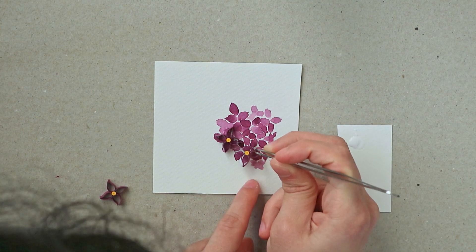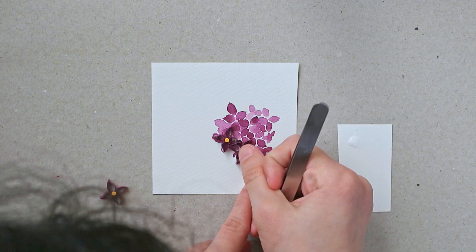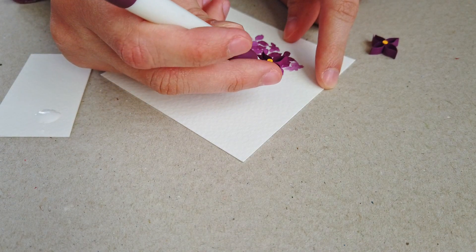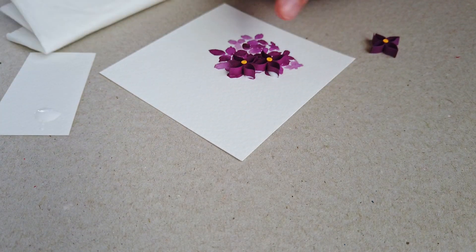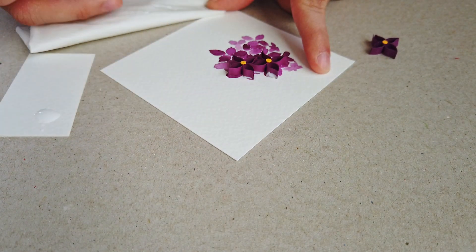the first thing I do is immediately start trying to remove that excess glue with my quilling needle or with another paper strip that I have around. It's important to remove that glue while it's still wet because otherwise it will be harder later.